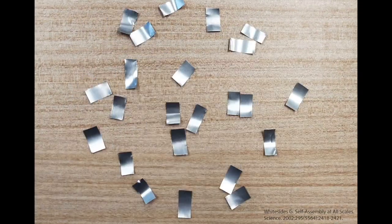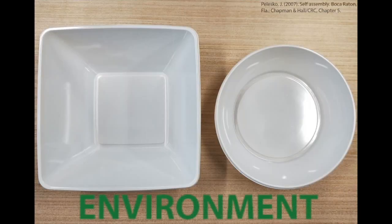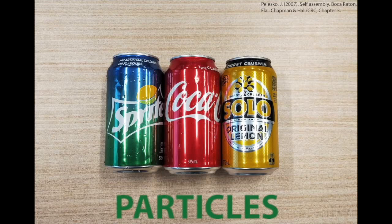There are four important factors to any self-assembly system. The first is the environment, which in our experiment will be bowls filled with water. The second is the particles. We're using aluminum cans cut up into small shapes.